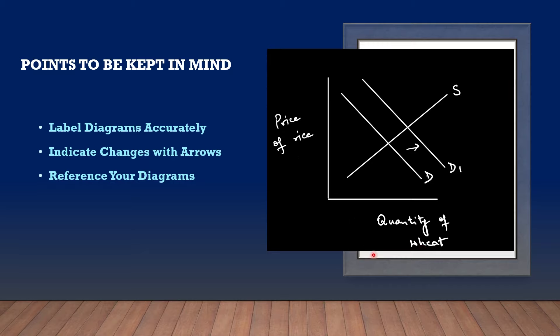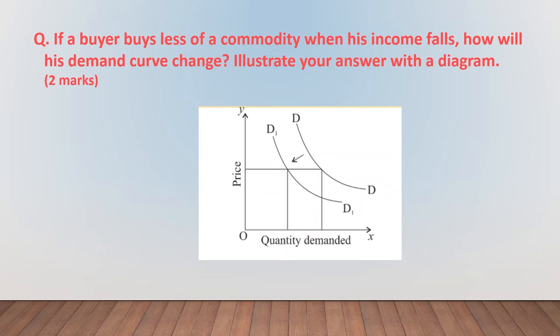It needs to be done clearly. Use arrows to indicate changes in variables; this makes your diagrams more informative. Remember, a well-labeled diagram with correct arrows can significantly convey your understanding, especially when you are short on time. I took this question as an example because I want to bring to your notice how precision is important in diagrams and you need to pay attention to minute details.